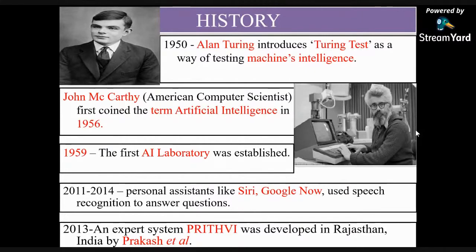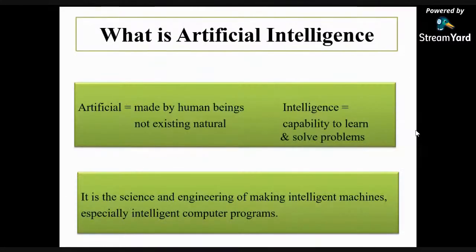By the years 2011 and 2014, personal assistants like Siri, Google Now, etc. were developed, which are used for answering human questions and helping in performing various tasks. By the year 2013, an expert system called P3 was developed in Rajasthan, India by Prakash et al.